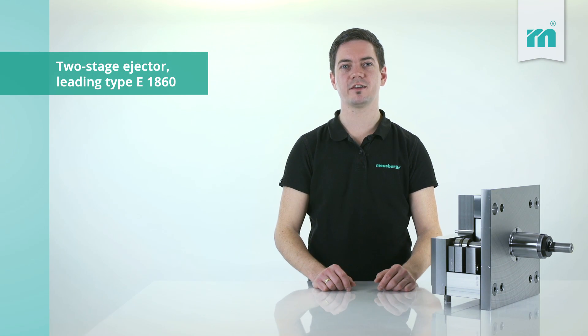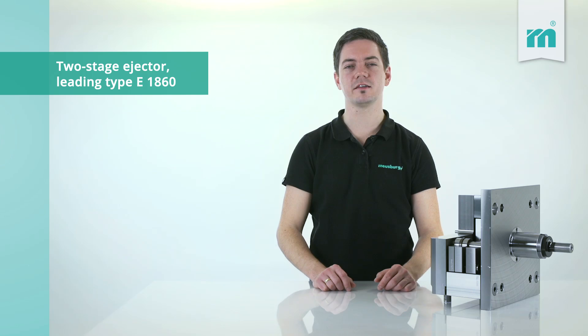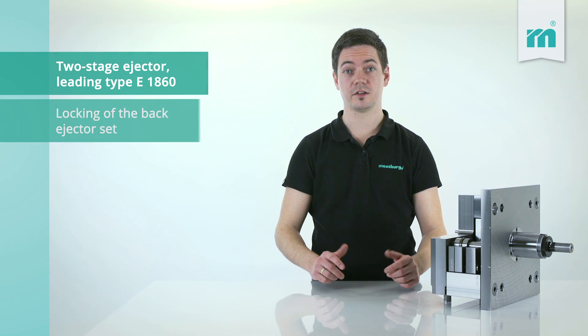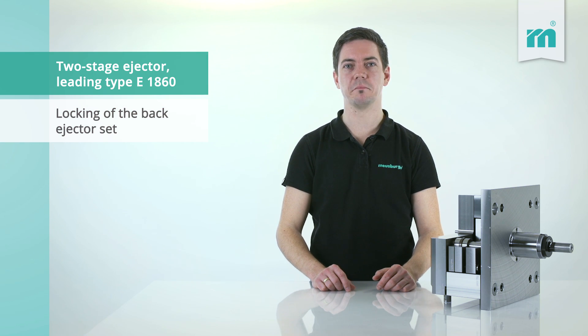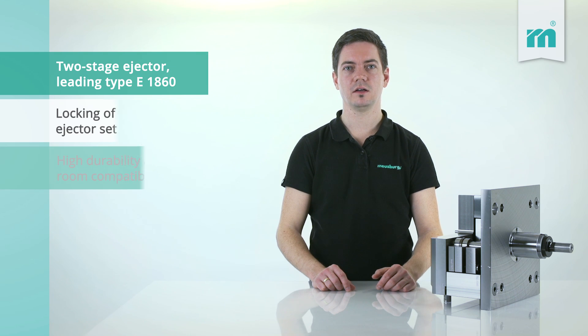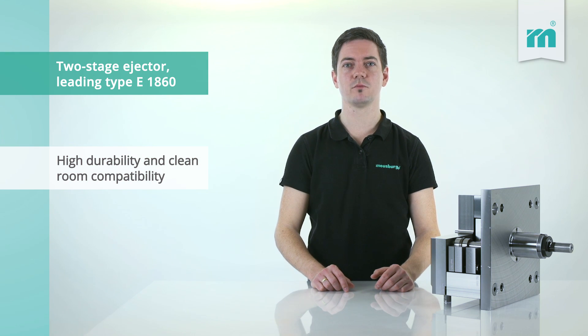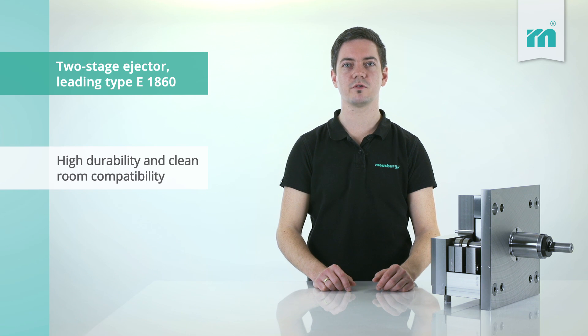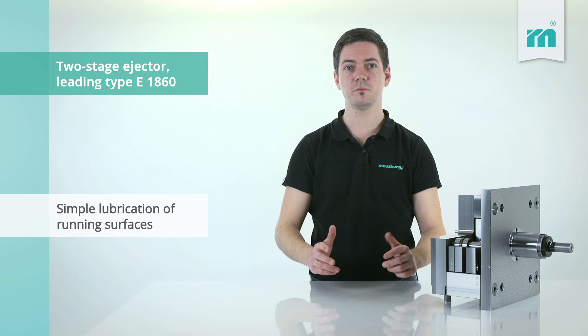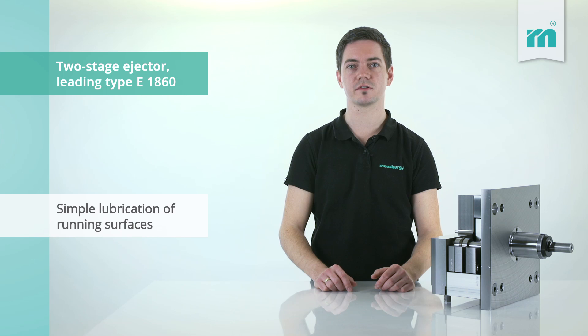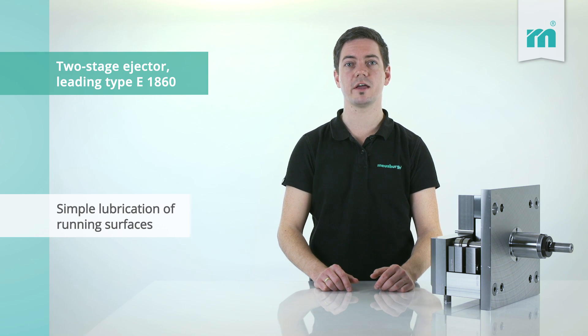The two-stage ejector leading type E1860 guarantees secure molding through locking of the back ejector set, high durability and clean room compatibility through DLC coated functional surfaces, and simple lubrication of running surfaces, optionally via the lubrication hole.